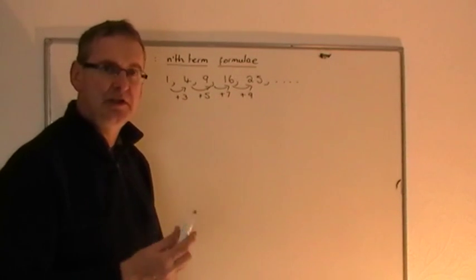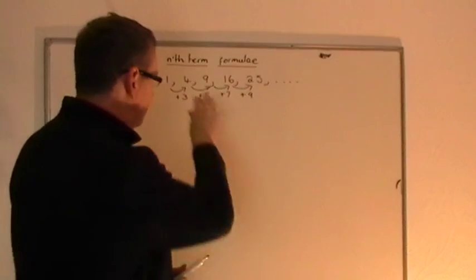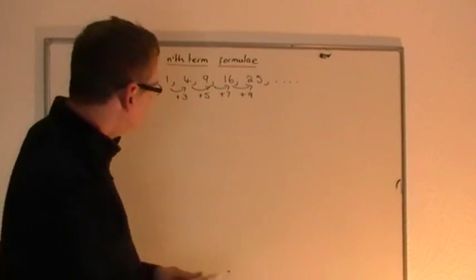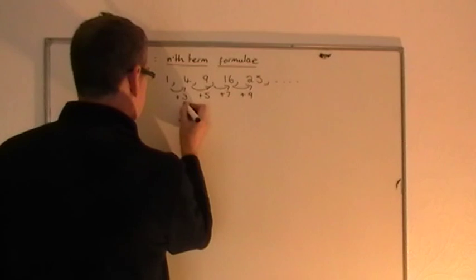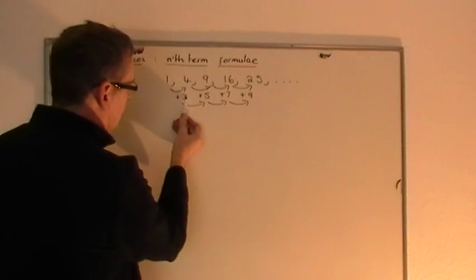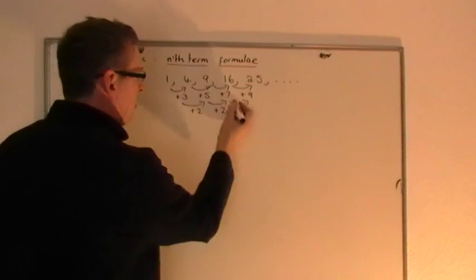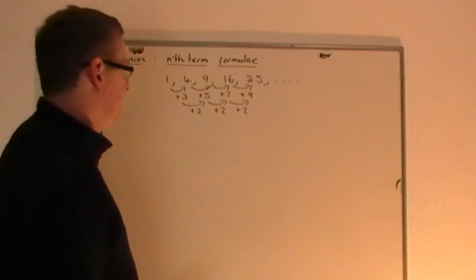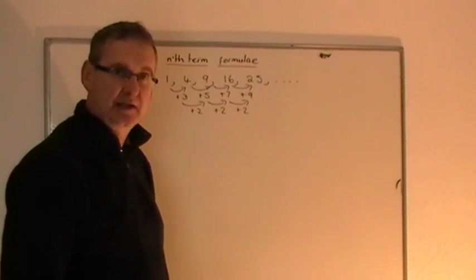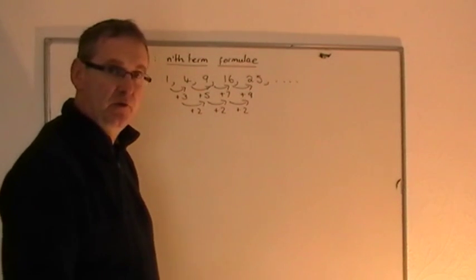As soon as you see this, what you need to do is look at these differences — these are called first differences, the differences between each successive pair of terms. Now, if they're not the same, which they're not, then you look at what we call the second difference. What's the difference between +3 and +5? That's +2. Between +5 and +7, another +2. Between +7 and +9, another +2. So the second difference is constantly plus 2.